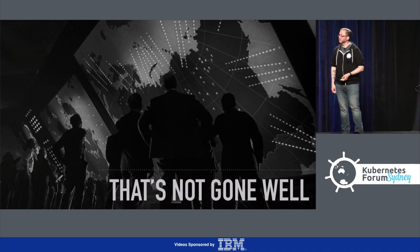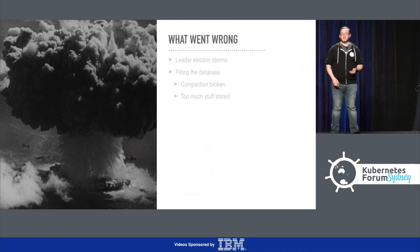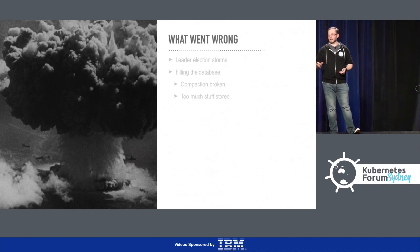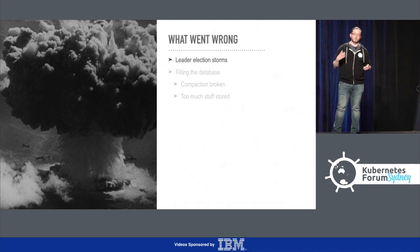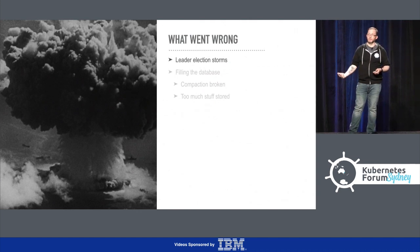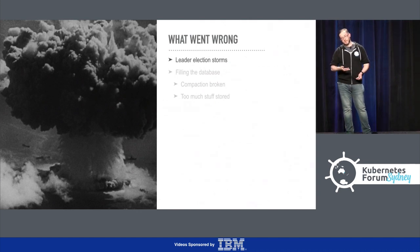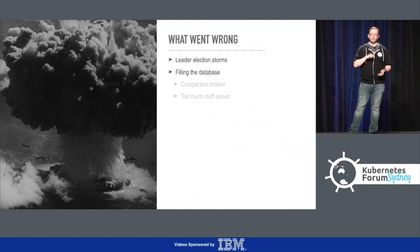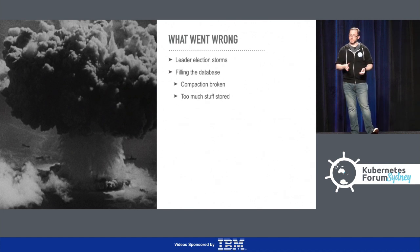So here's the real meat of why you're here - all the stories about all the times things didn't go well. There are sort of two main classes of problems that we had. The first one was leader election storms. The second thing that happened was that we filled the database. Etcd's database, by default, is 2.1 gigabytes. If you put 2.1 gigabytes worth of data in it, you will have a bad day. We did that by breaking the compaction, which is what keeps the database small, and sometimes by just putting too much stuff in there.